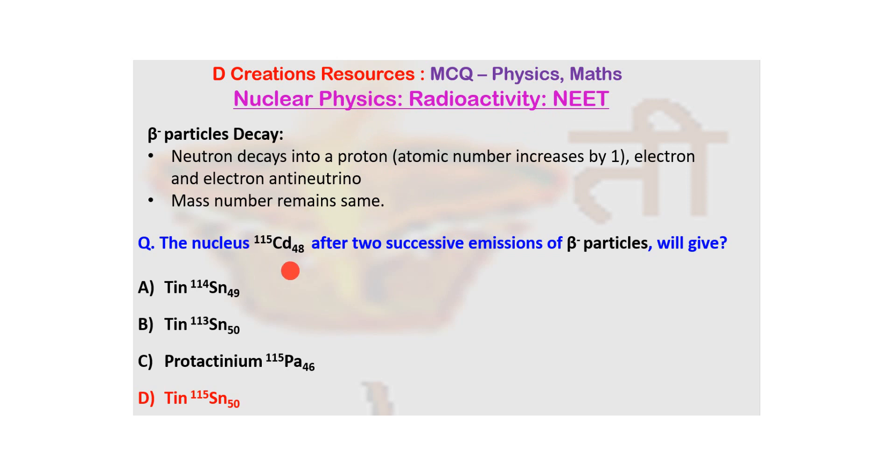Now note here that it is not just one emission, there are two successive emissions. So the atomic number will be increasing by 2 and there is going to be no change in the mass number. So in which option do you see that?